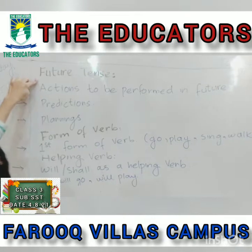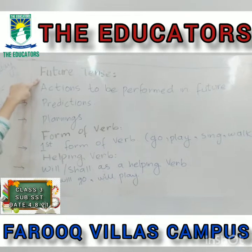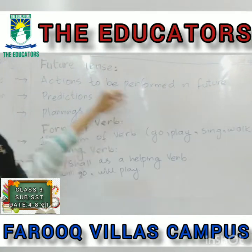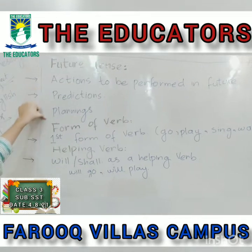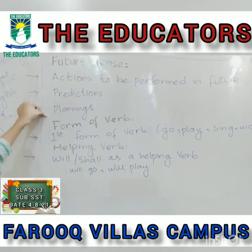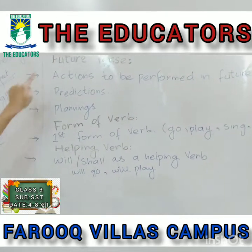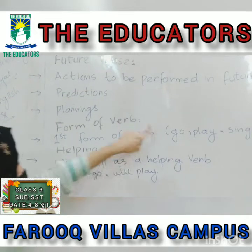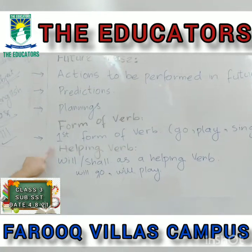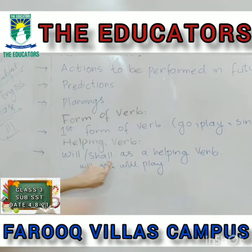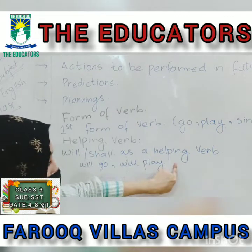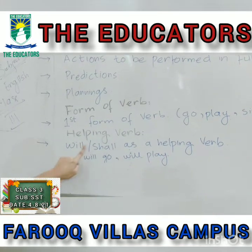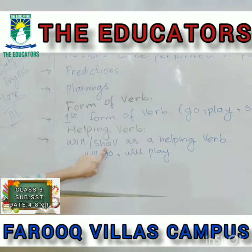In future tense we will talk about the actions to be performed in future, about the predictions and about the future plannings. The form of the verb in future tense is always the first form. Helping word: in future tense we will use 'will' and 'shall'. 'Will' is used with the second person and 'shall' is used with the first person — the person who says 'I'.